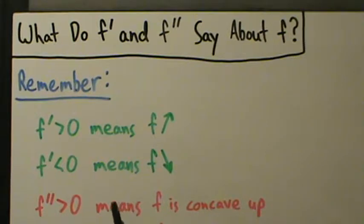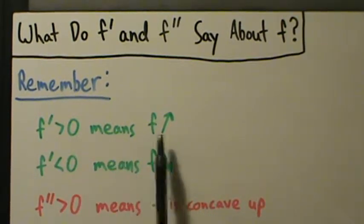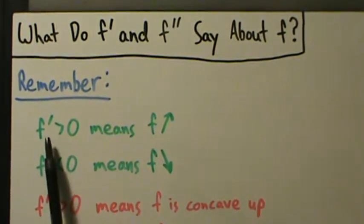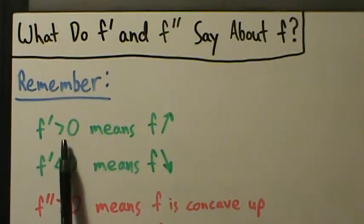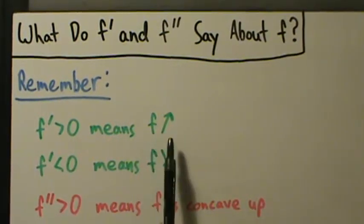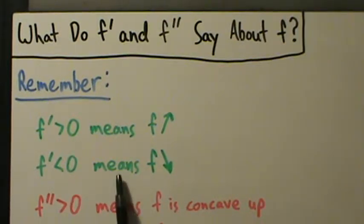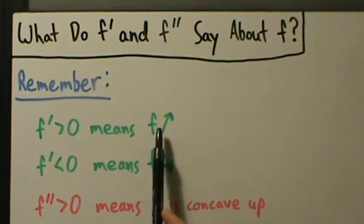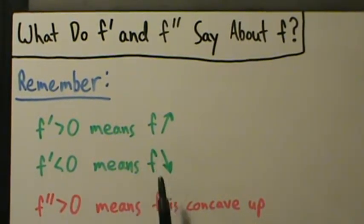Remember that if f prime is greater than zero, that means f is increasing. f prime, the first derivative, is pretty much just the slope of the function f. So if the slope is positive, the original function is increasing. Likewise, if the slope f prime is negative, then the original function f is decreasing. f prime positive means f is increasing; f prime negative means f is decreasing.